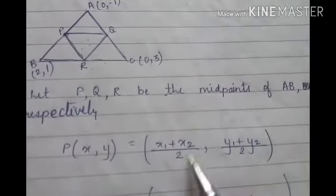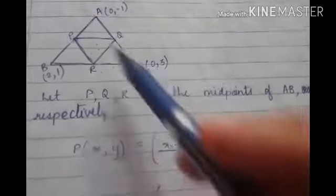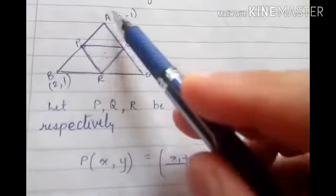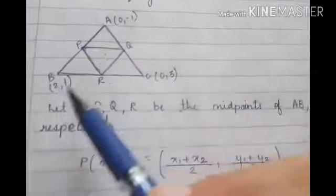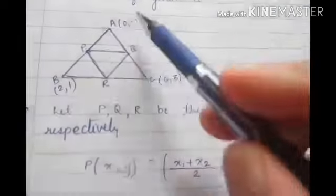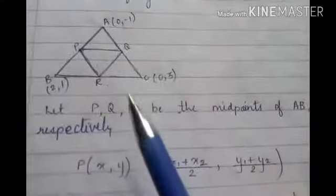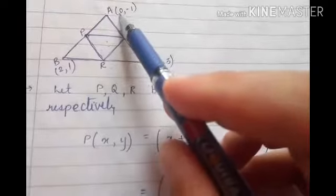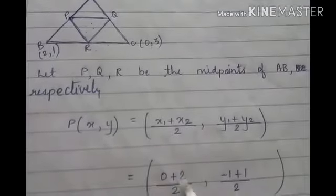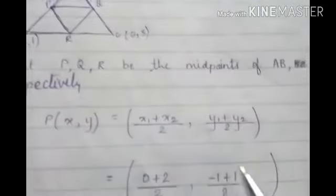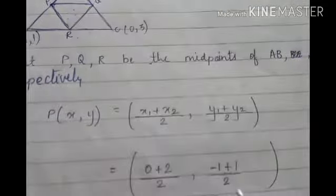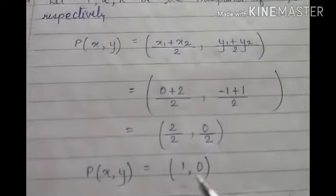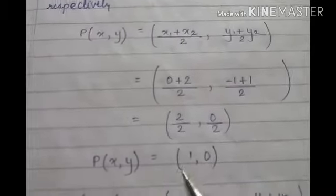The midpoint formula: P(x, y) = ((x1 + x2)/2, (y1 + y2)/2). Since P is the midpoint of AB, substituting the values: x1 = 0, x2 = 2, so (0 + 2)/2 = 1. And y1 = -1, y2 = 1, so (-1 + 1)/2 = 0/2 = 0. Therefore, P = (1, 0).